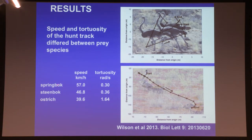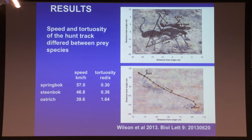As you go from a big animal like a steenbok to a medium-sized animal to a small animal, the speed of the chase shows a general decreasing trend, compared to where the other tracks — the turning tracks — increase.